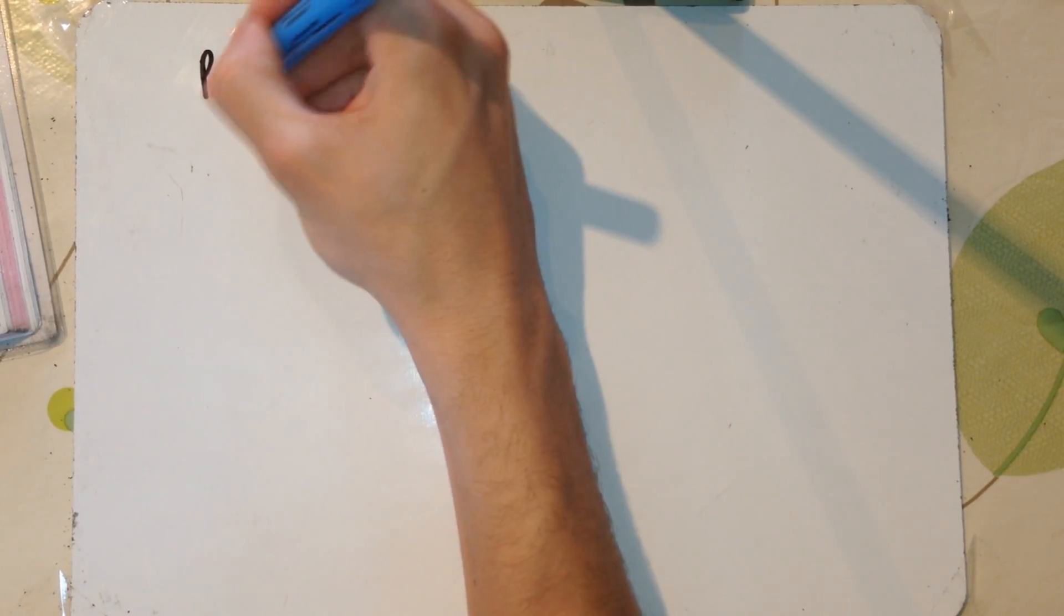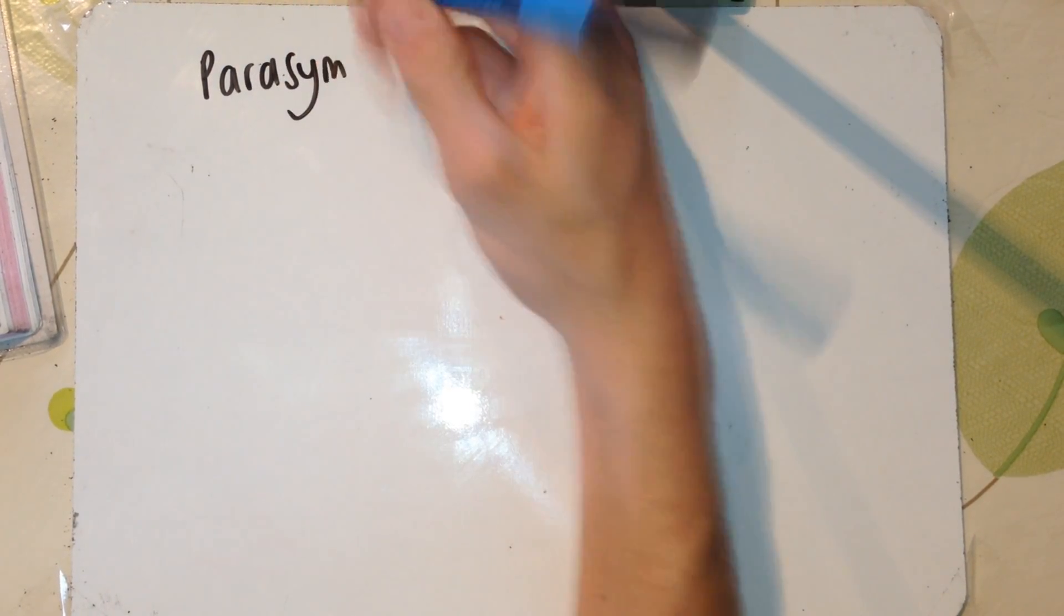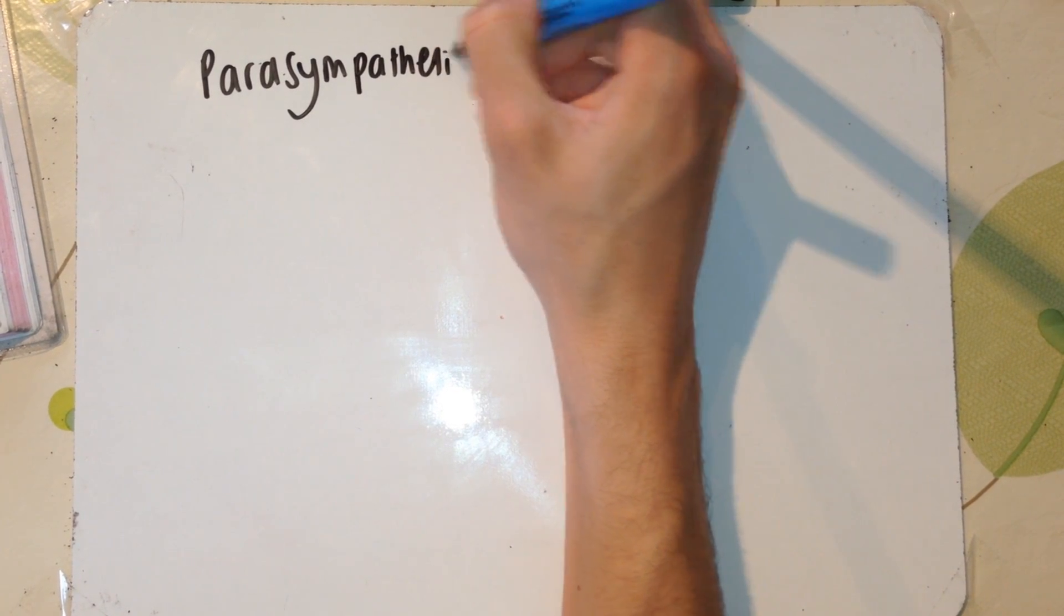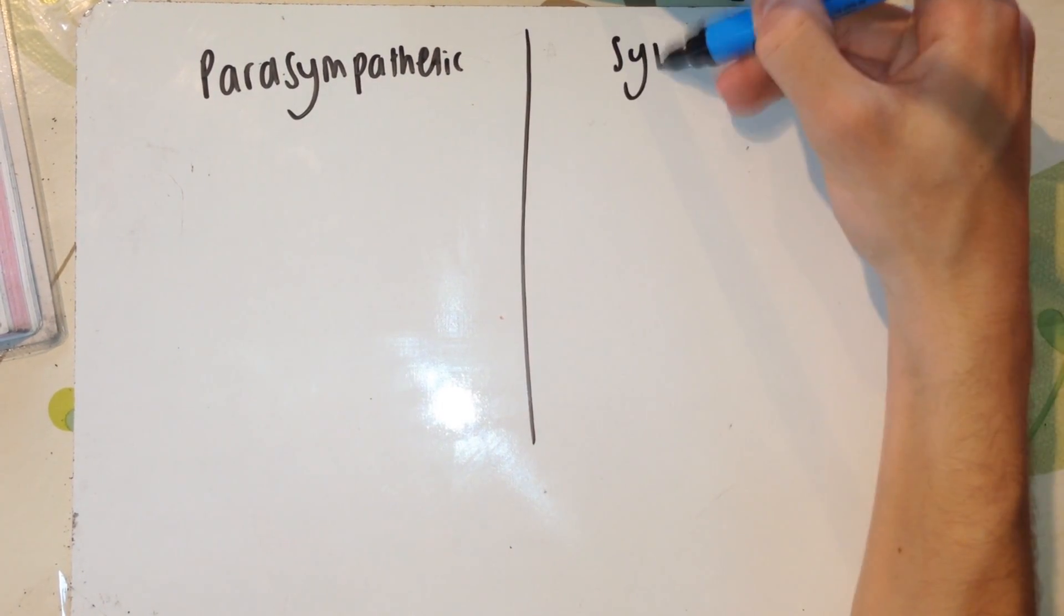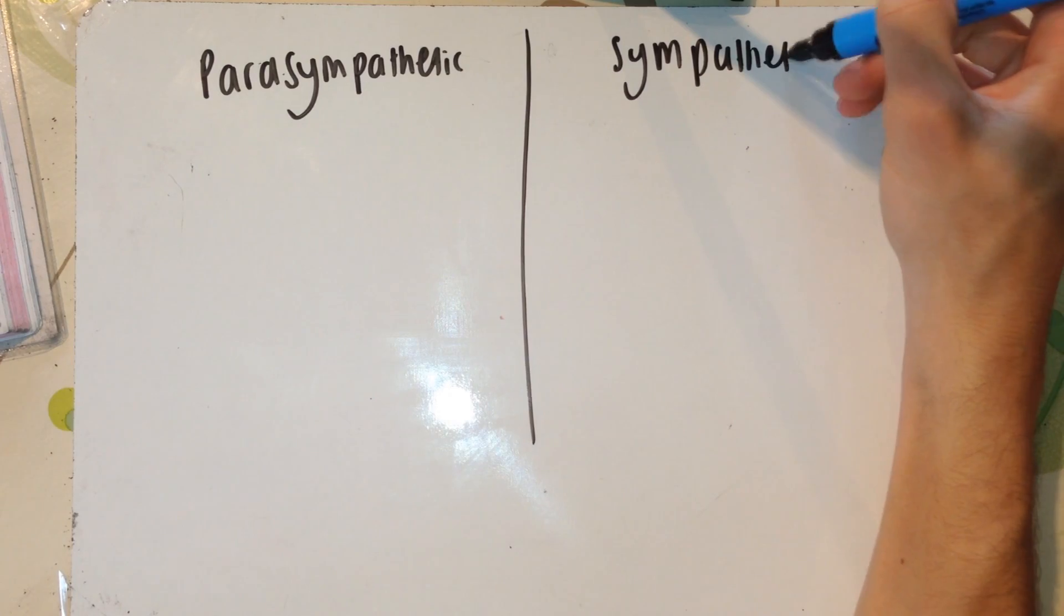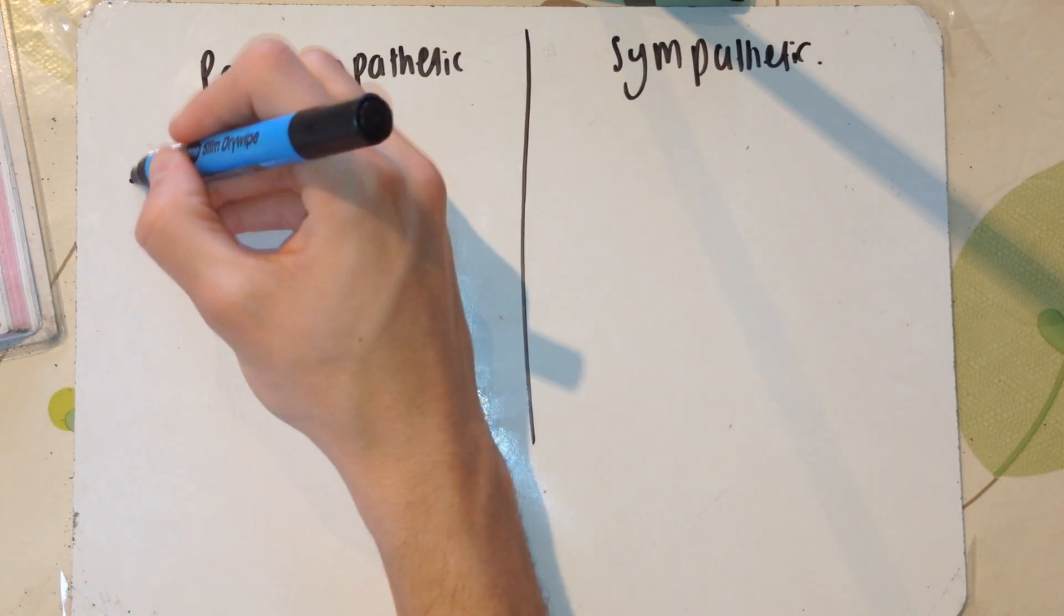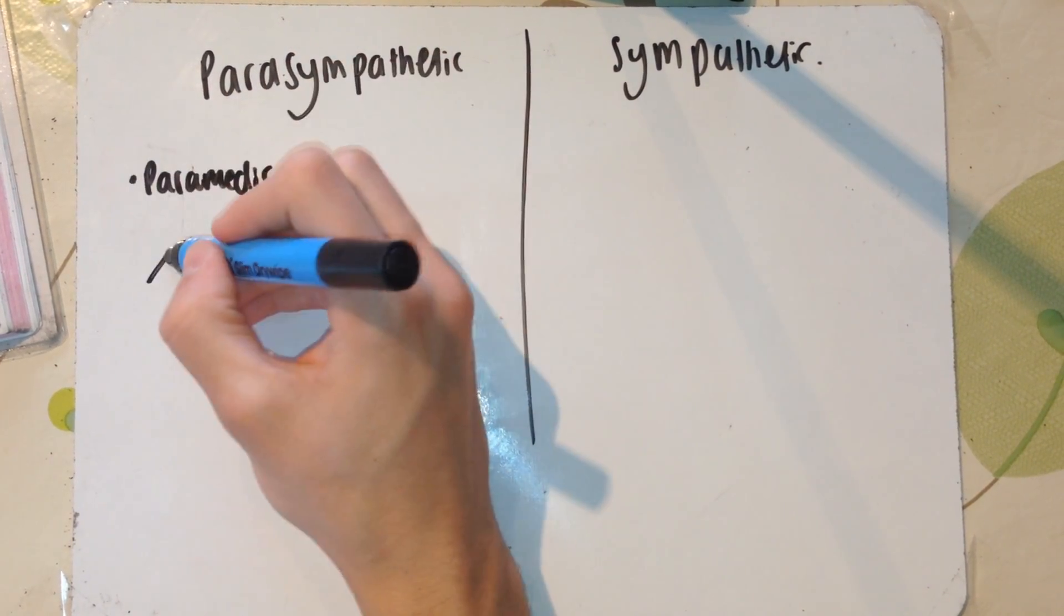Now I'm going to talk about the main differences between the parasympathetic and sympathetic nervous systems. The way I'm going to help you remember what one is what is by this: I remember parasympathetic by thinking of a paramedic.